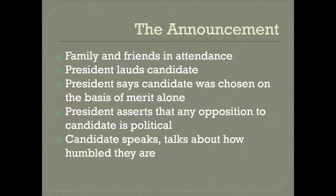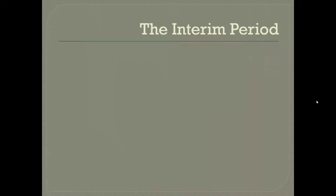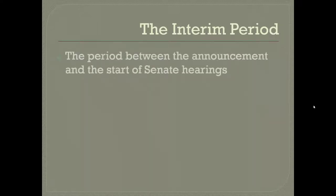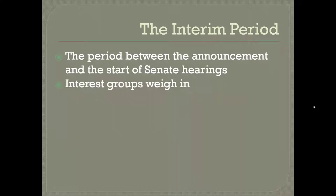Only after the president speaks does the candidate get an opportunity to speak, and they take great pains to say nothing controversial. They talk about how humbled they are and their respect for the law and for the president who nominated them, but certainly nothing controversial, and they typically do not take questions at the announcement. The period between the time the president makes the announcement and the time the Senate Judiciary Committee begins its hearings is known as the interim period, which usually lasts two to three months. This is the period when interest groups and others get the opportunity to weigh in, investigate the candidate, and make their views known.